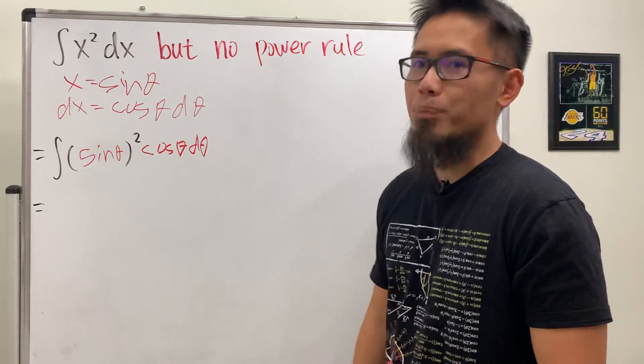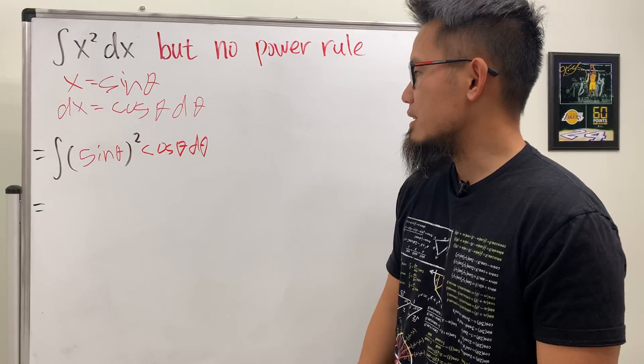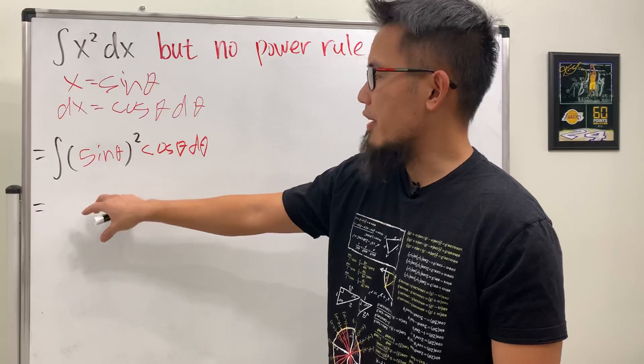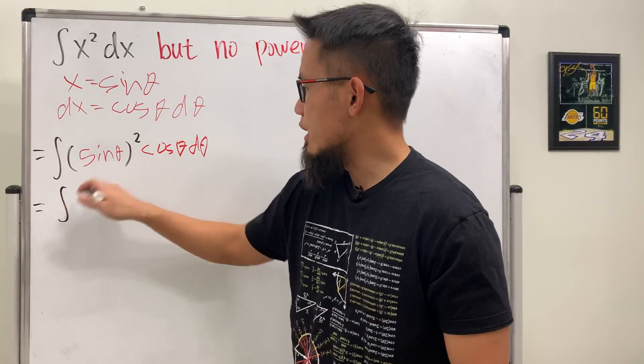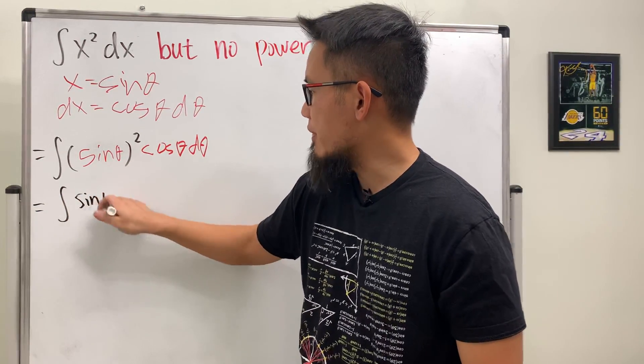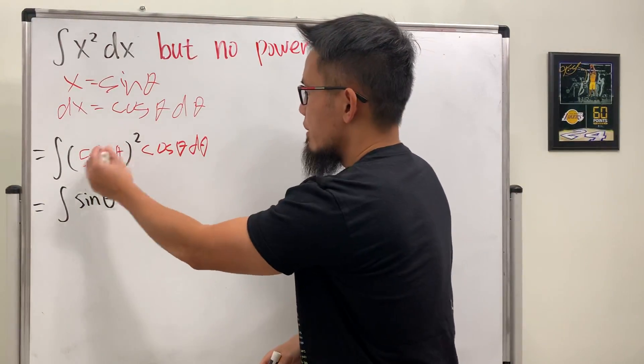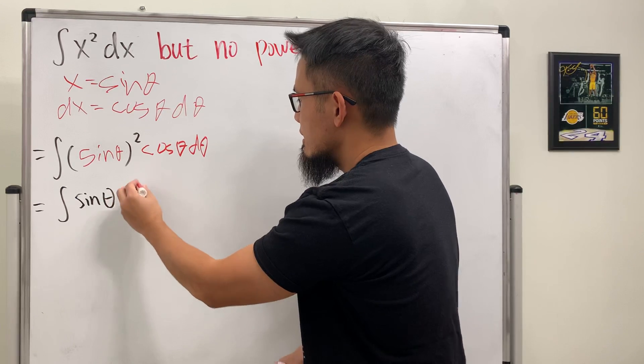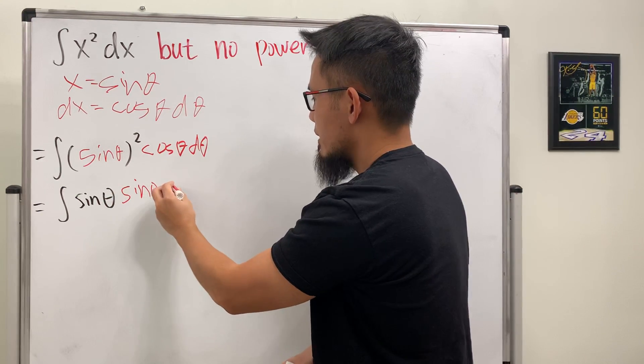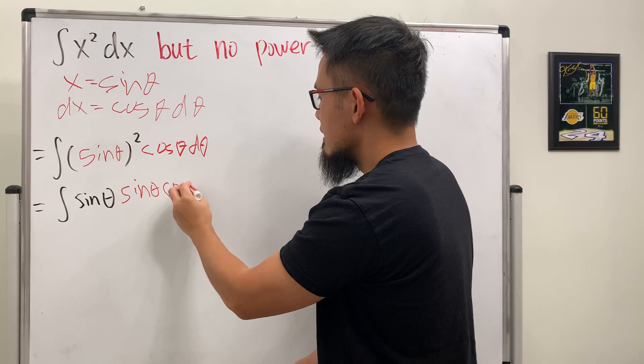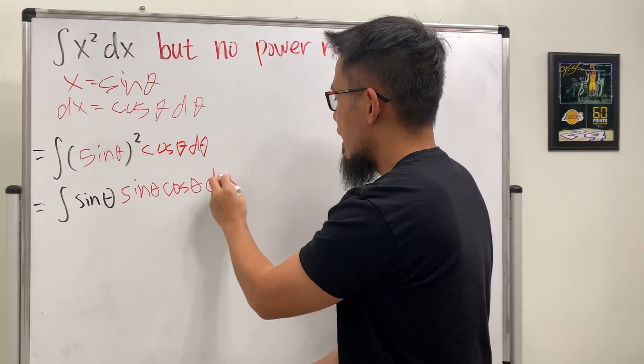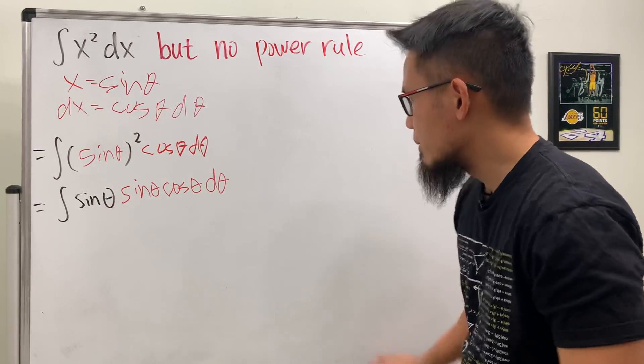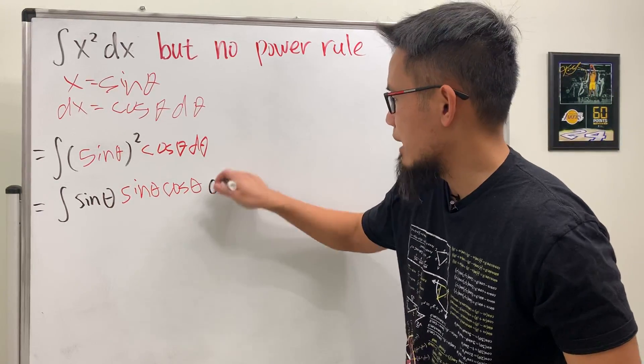How can we take off this? Do not do u sub. If you do u sub, then you defeat the whole purpose. This right here is the same as sine theta times sine theta. So I'm going to write this as integral, and I'm going to put down the first sine theta in black, and then the second sine theta in red, and this right here is cosine theta, and then d theta.